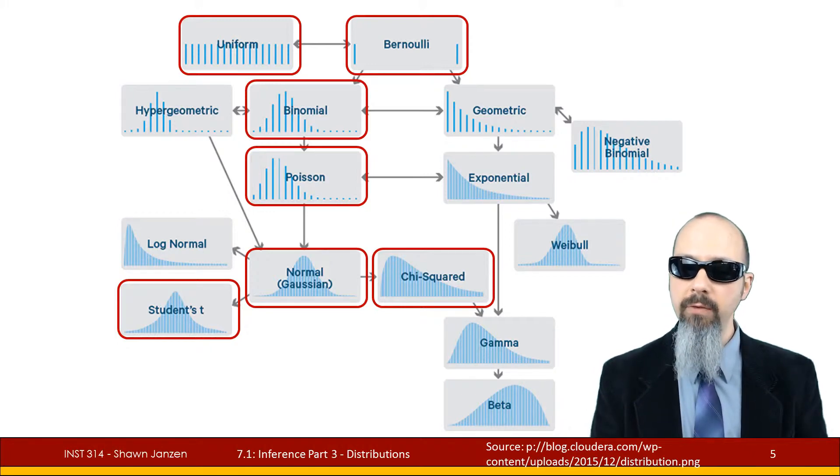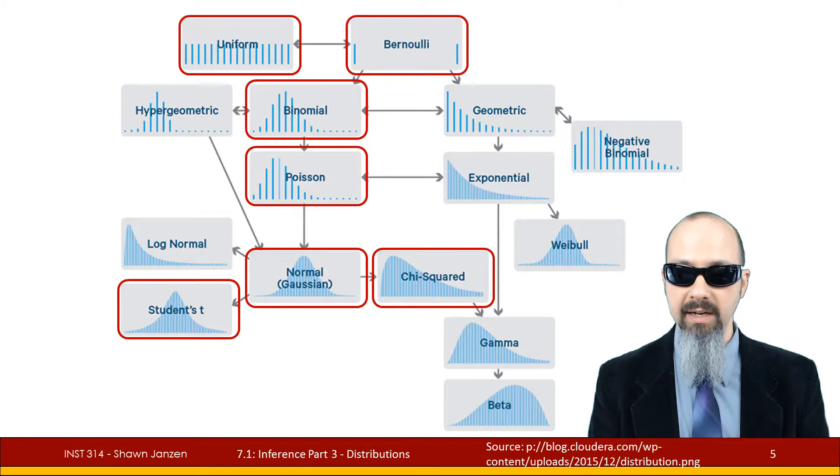And so we're going to look at the uniform, the Bernoulli, the binomial, the Poisson, students t, normal or Gaussian, and chi-squared. But like I said, there are many more that we're not going to quite touch on yet.